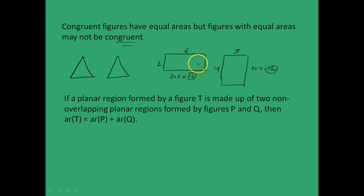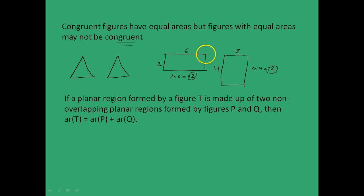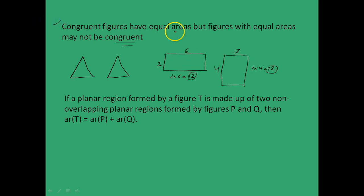Because obviously their dimensions differ and they are not identical figures — they do not have the same size. They have the same shape, arguably, because both can be called rectangles, but they definitely do not have the same size. So this is important: congruent figures have equal areas, but figures with equal areas may not be congruent.